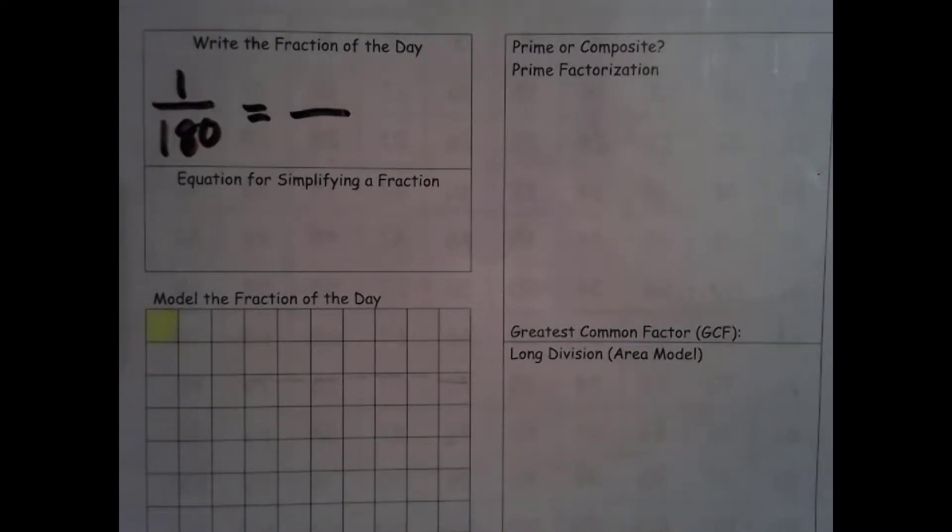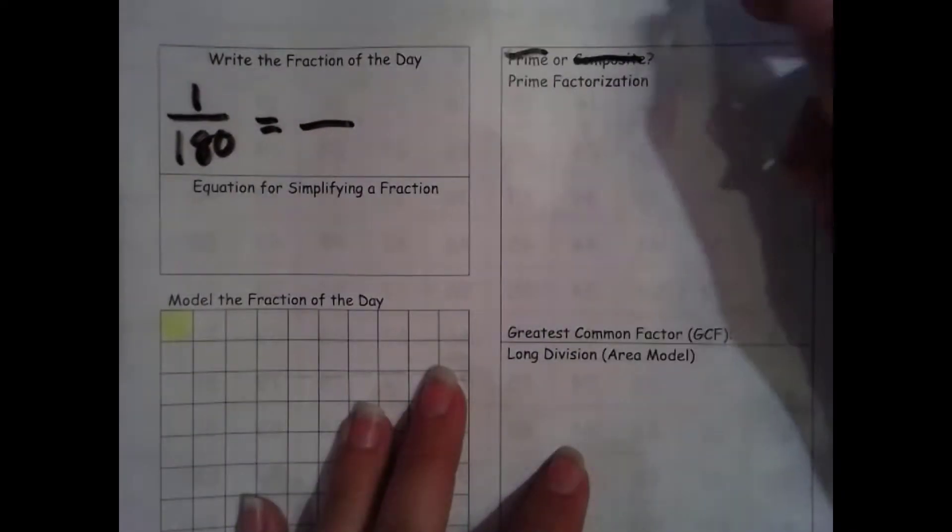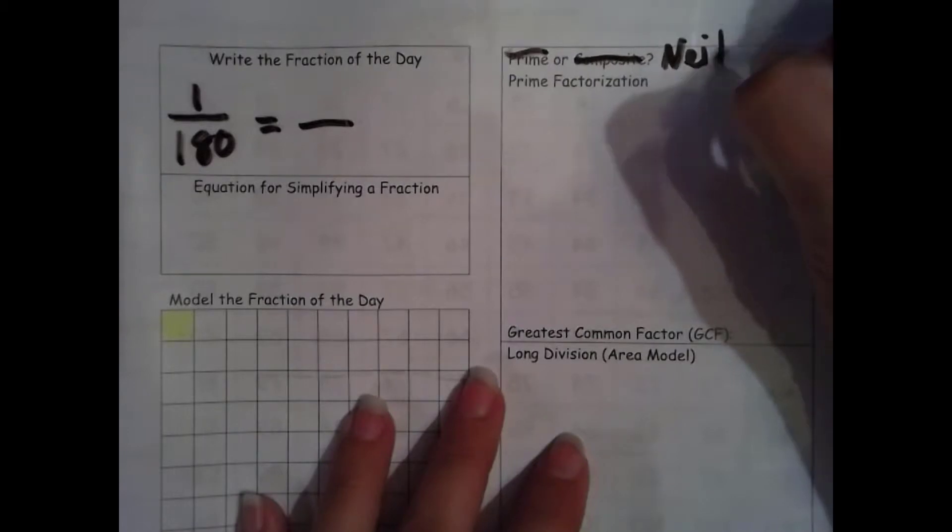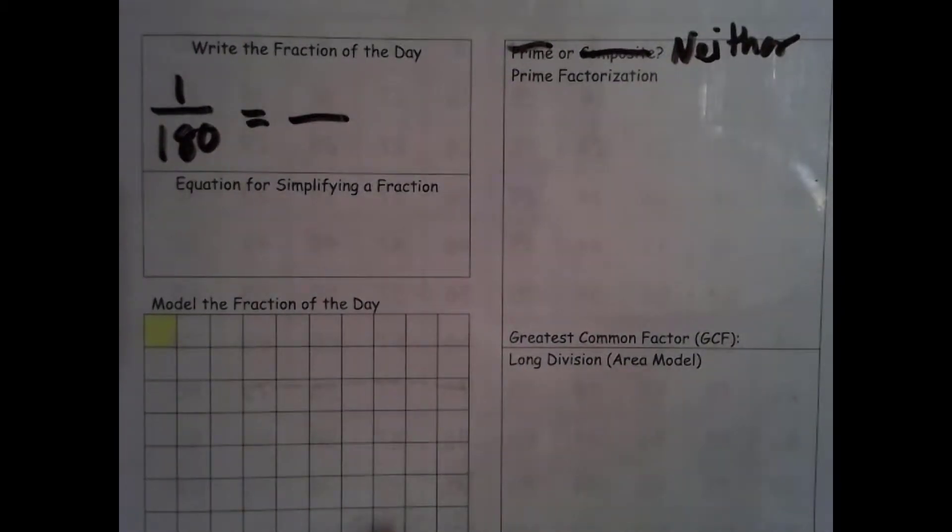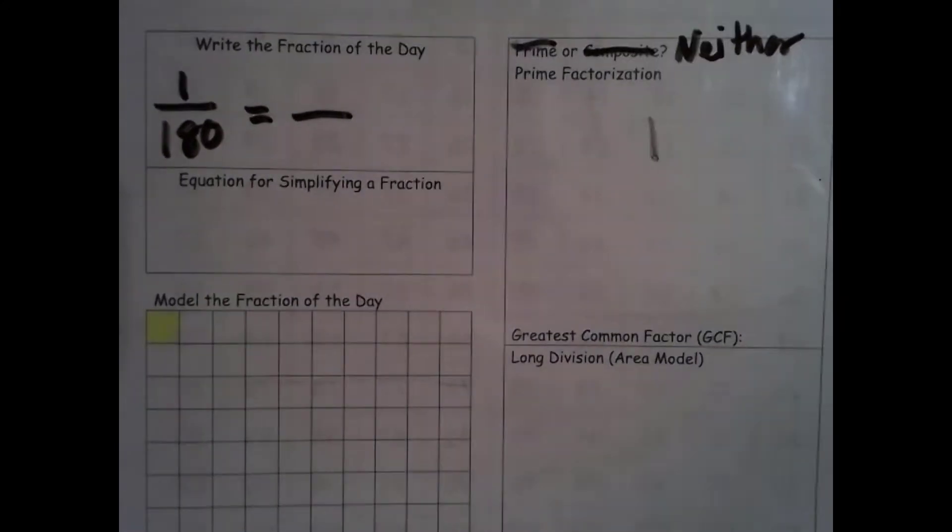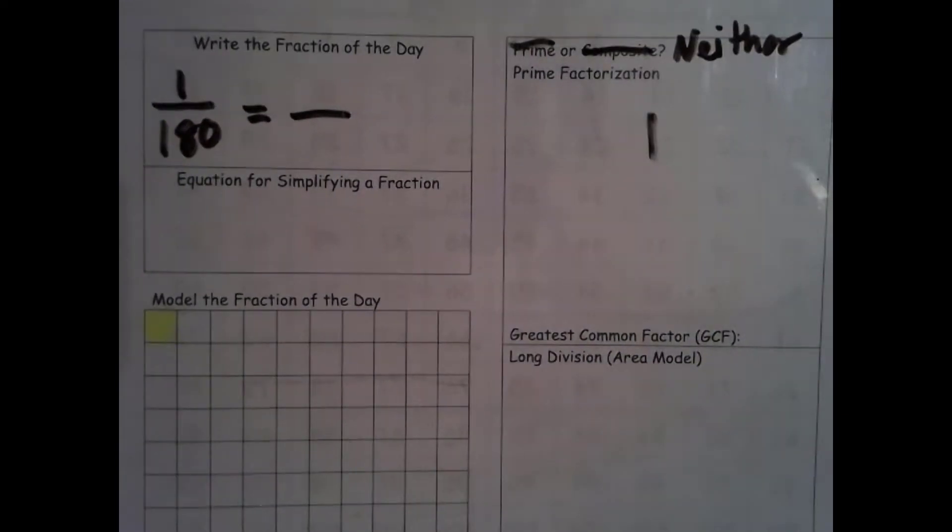One has exactly one factor. So it's not prime and it's not composite. It's our only counting number that is neither. So we actually can't do the prime factorization because there's no prime numbers in 1. It's a special, very special number.